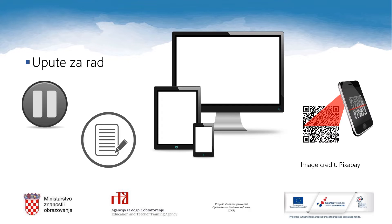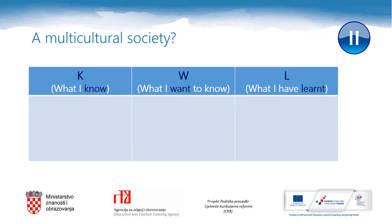Let's start. We will start thinking about multicultural societies. Pause this video and draw this table into your notebook. In the first column, think and write what you already know about multicultural societies. What vocabulary do you have? What concepts have you already learnt?